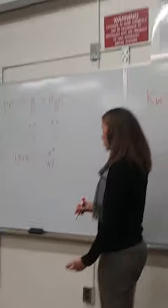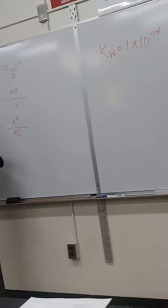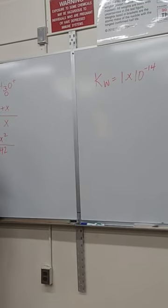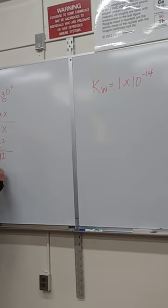So this is easy to solve for. I'm just going to take 1.3 times 10 to the minus 5, multiply by 0.42 and take the square root to get X.